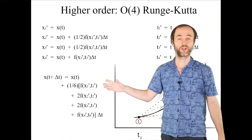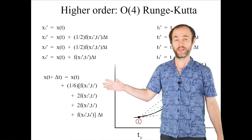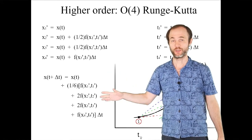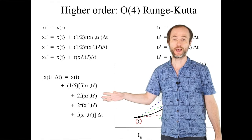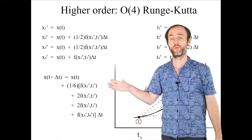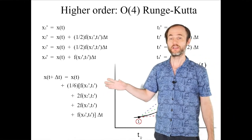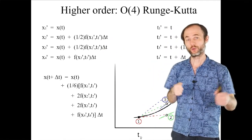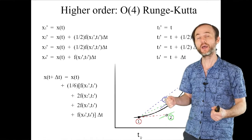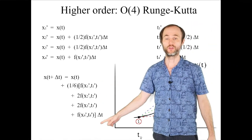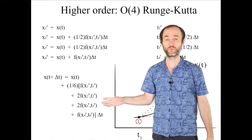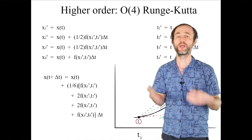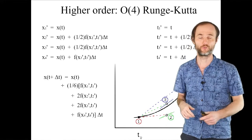If you're interested in why that gives a high-accuracy solution, please send me a note. Suffice it to say: if you expand the function to high order and perform all these steps forward in time and then take the weighted average, all the low-order terms cancel out and you end up with the fourth-order method.